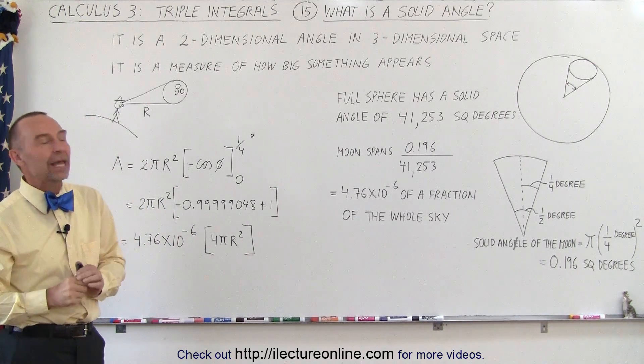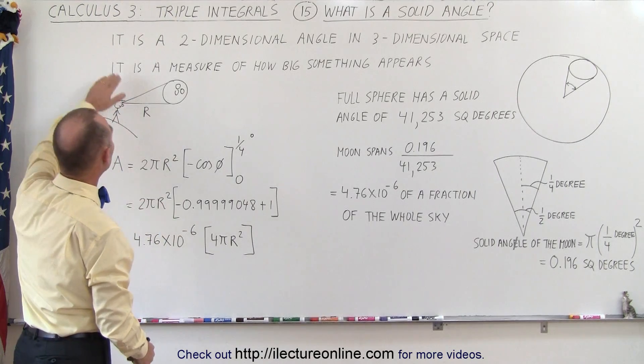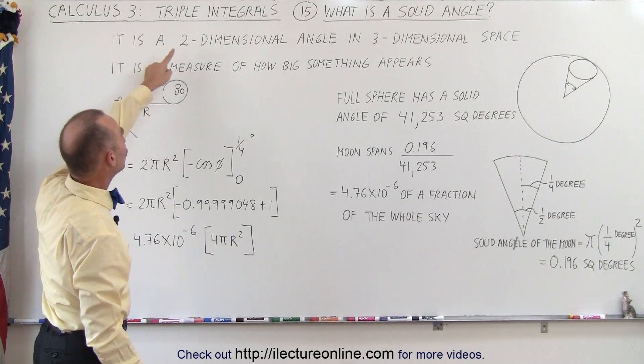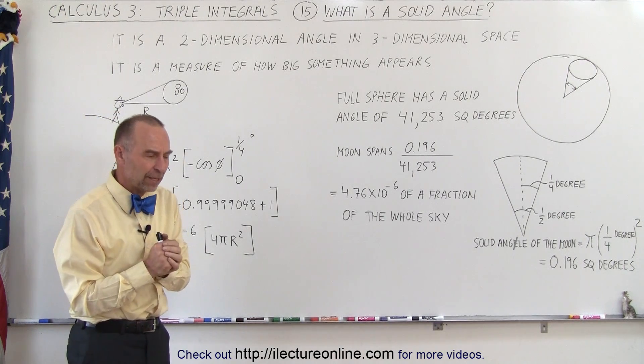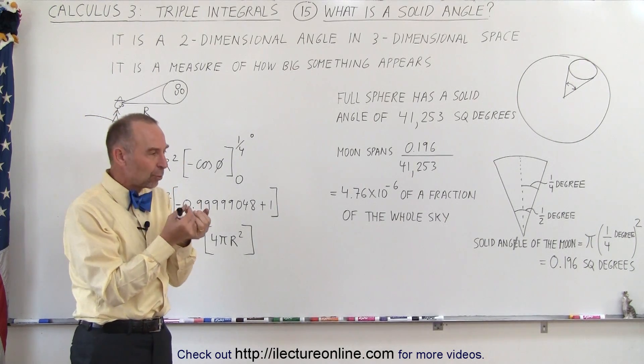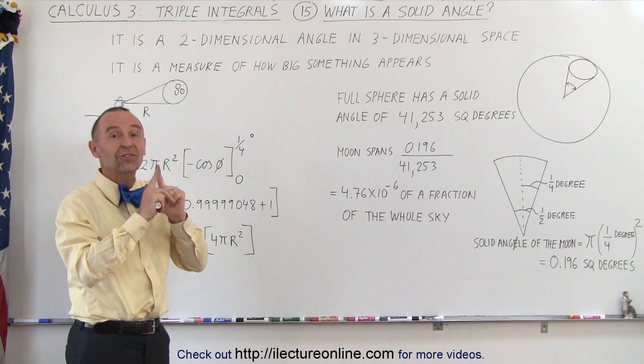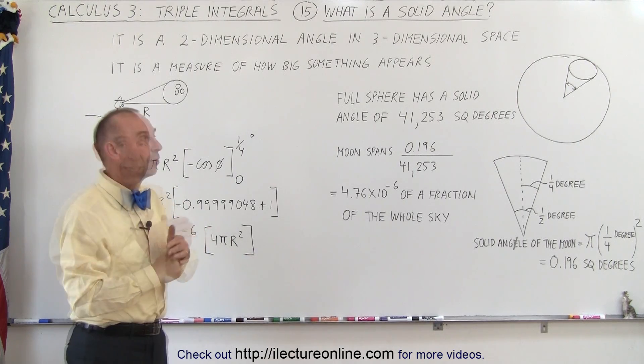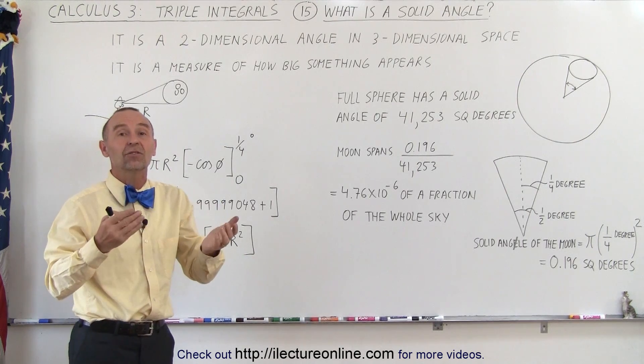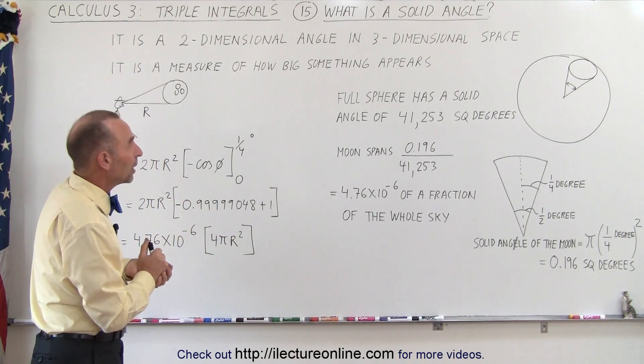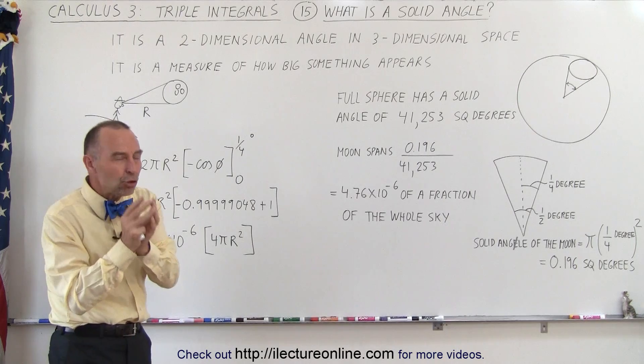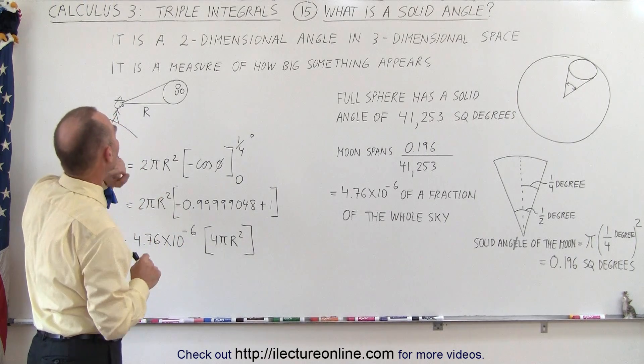But what do we mean by a solid angle? Well, the definition could be expressed as follows. It is a two-dimensional angle in three-dimensional space. Now a two-dimensional angle is not something we normally deal with. We usually deal with a single-dimensional angle. But what do we mean by a two-dimensional angle? We'll get to that in a moment.